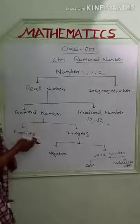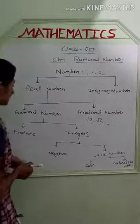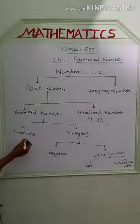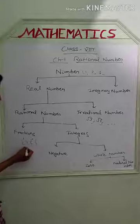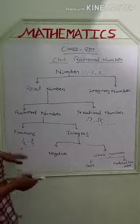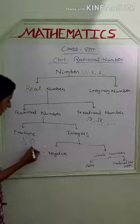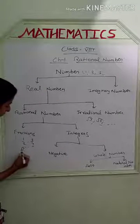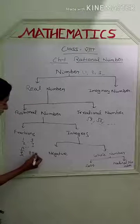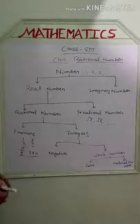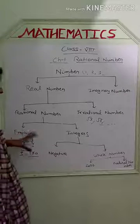The two parts of rational numbers are fractions and integers. What is a fraction? Fractions are numbers like 1/2 or 3/4 — these terms are in the form of P by Q, where Q is not equal to 0. This kind of number is a fractional number.